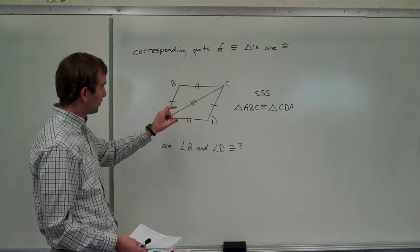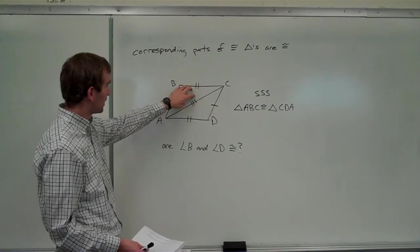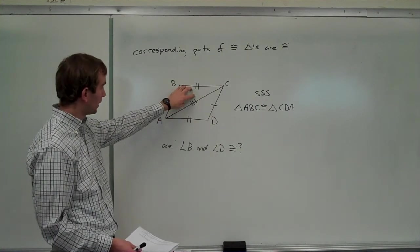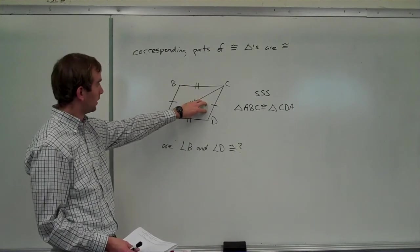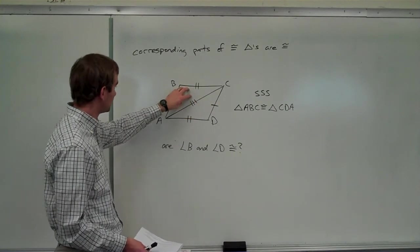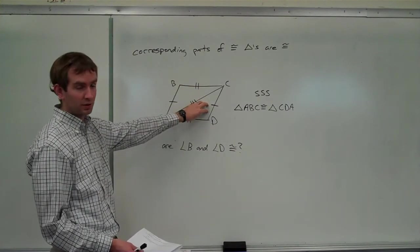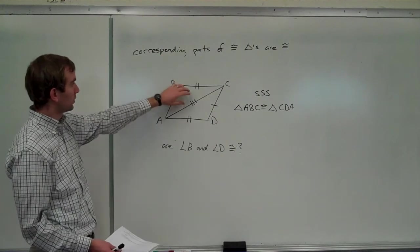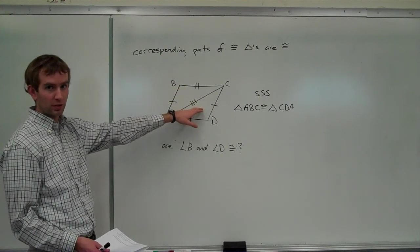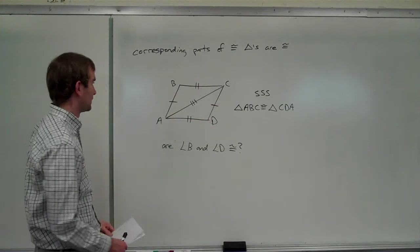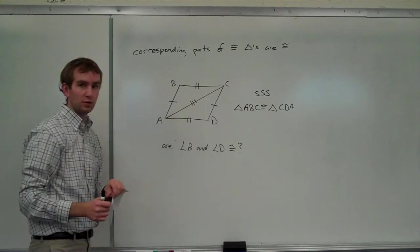And so we know by that definition that all corresponding sides of this triangle are congruent to the corresponding sides of this one. And all angles of this one that correspond to the angles of this one also have to be congruent. So that's what this says. It says that corresponding parts of one triangle have to be congruent to the other triangle's corresponding parts.